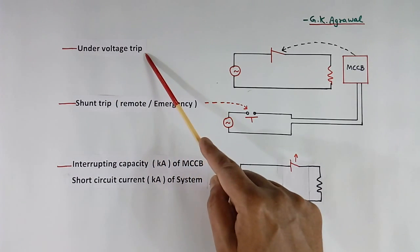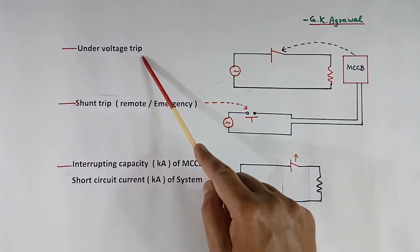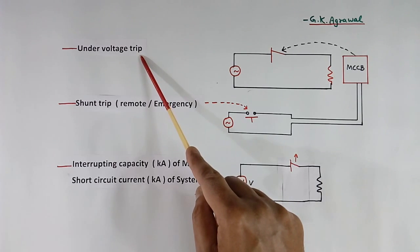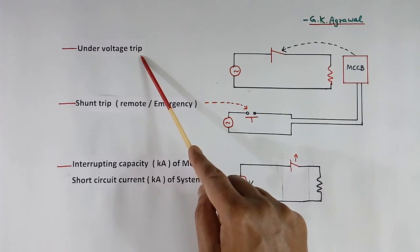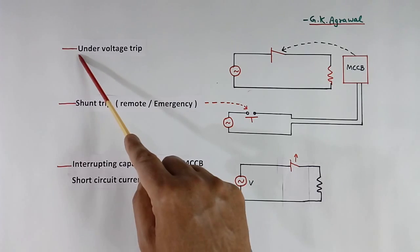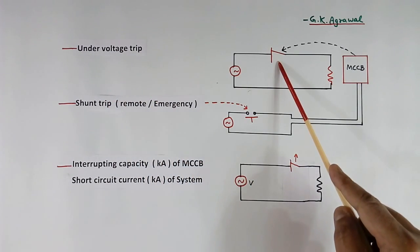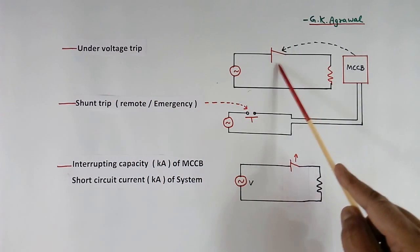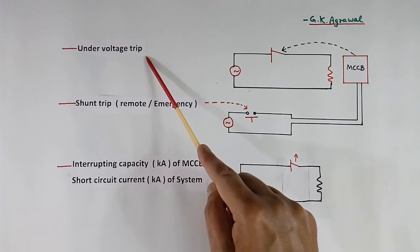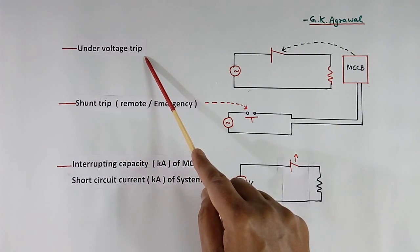Now, under voltage trip. There are some equipments which will not work if voltage comes down too much. So there we sense under voltage and trip this contact. This is in addition to thermal trip and magnetic trip.